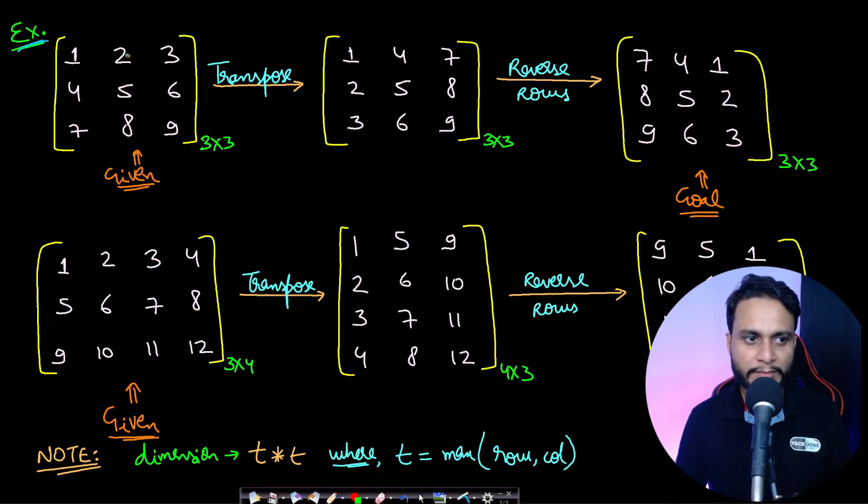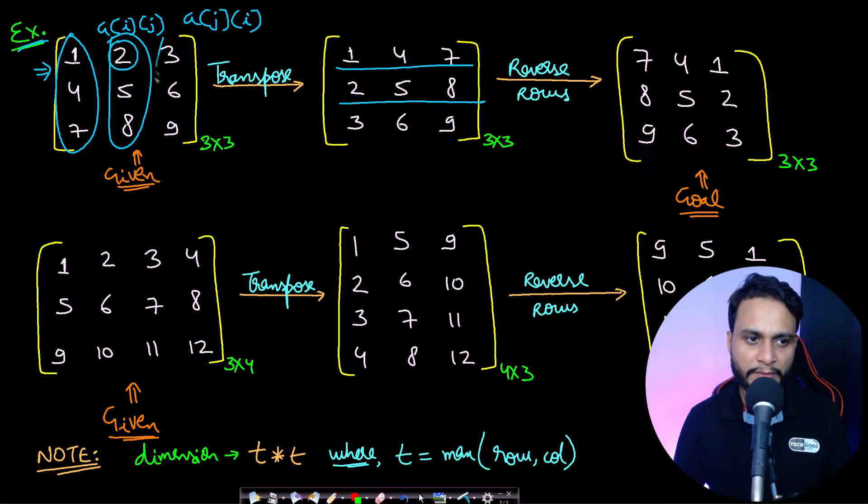How to do the transpose? The transpose is nothing but if you replace this a[i][j] element with a[j][i] element, that means if you convert the columns to rows and you convert the rows to columns, I mean it's the transpose matrix. So let's see: if I make this first column the first row, if I make the second column the second row, and if I make the third column the third row, then it is known as the transposed matrix.